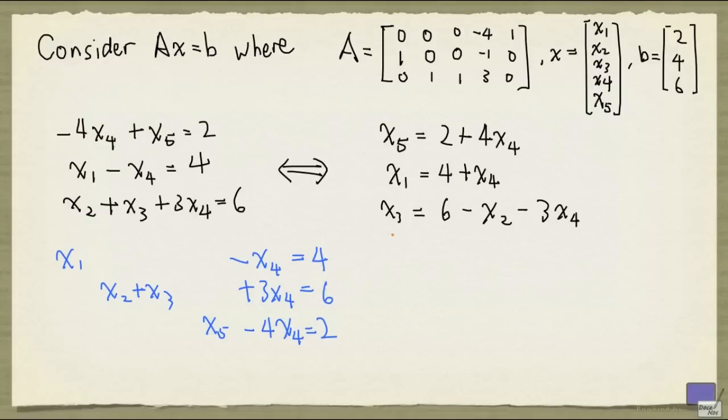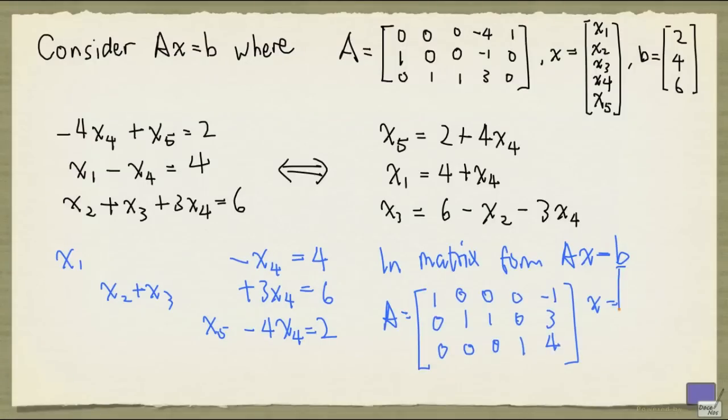Now, I can write this in matrix form, and if we again use A as the coefficient matrix, and B for the right-hand side values, A would be simply this matrix. And x this time would be different because the positions of x4 and x5 have interchanged. Alright? Now focus on the matrix A.